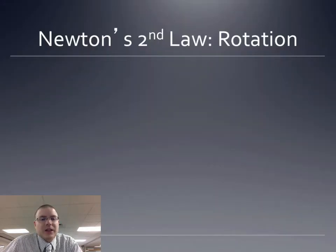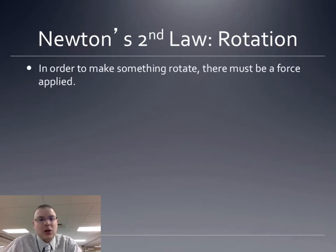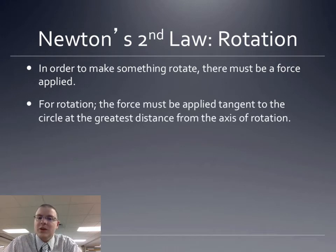So that then brings us to second law for rotation. And Newton's second law says that in order to make something rotate, there must be a force applied. Or, like we said before, force makes masses accelerate. But in this case, now we are rotating, so we are angularly accelerating. For rotation, we saw that your force needs to be applied tangent to the circle. And to get the most rotation possible in today's lab, we had to have the force at the biggest distance from the axis.